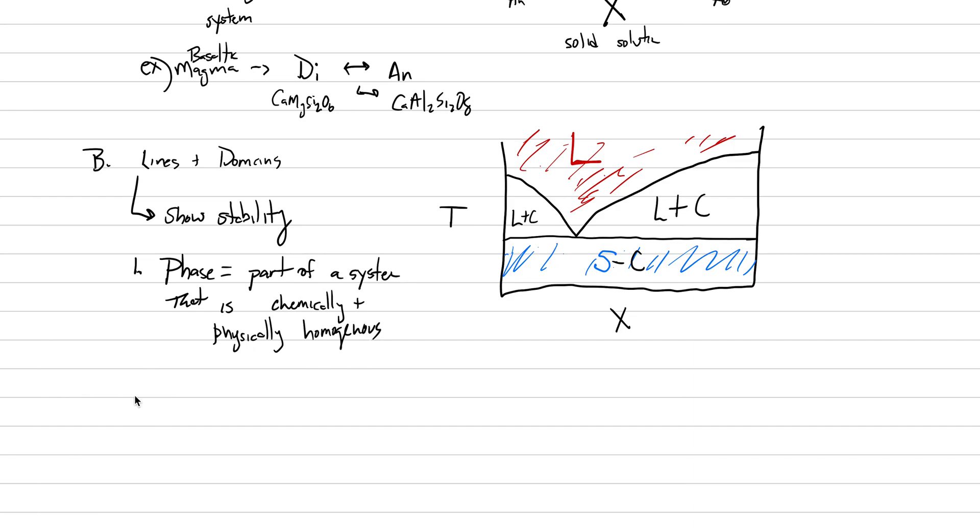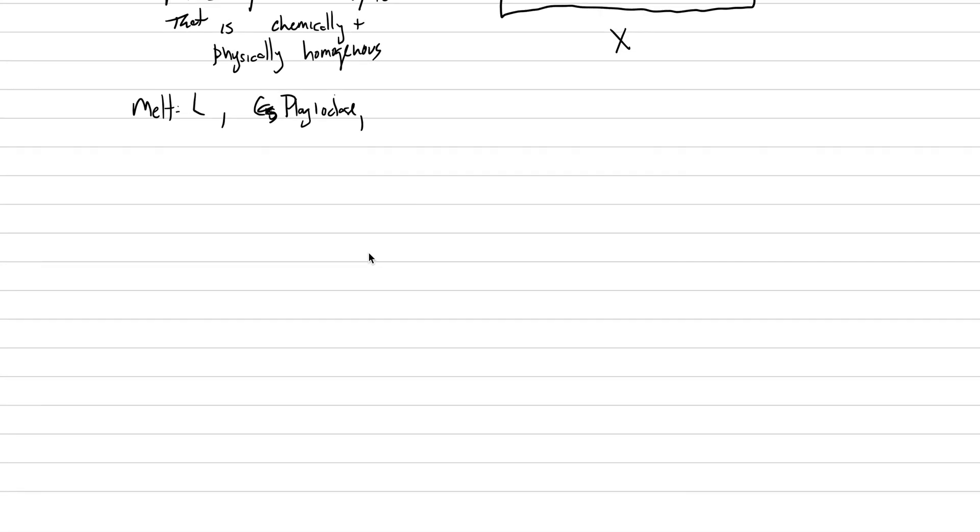So things that are phases are the melt, which I gave the symbol liquid. It can be the different crystals. So let's just say a plagioclase crystal would be a phase. A quartz crystal would be a phase. An olivine crystal would be a phase. A bubble would also be a phase.